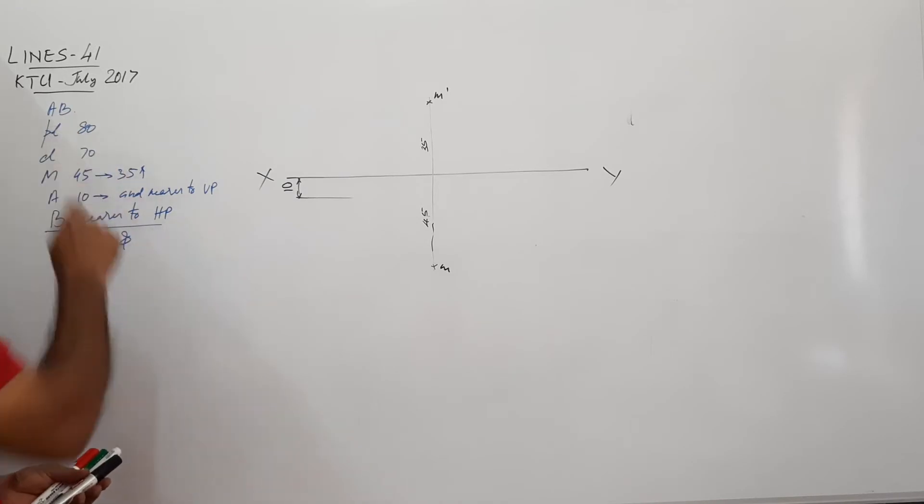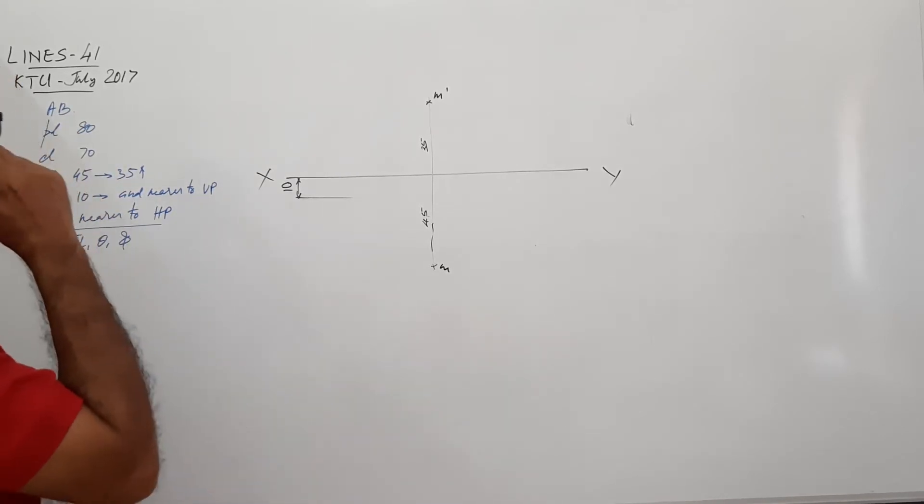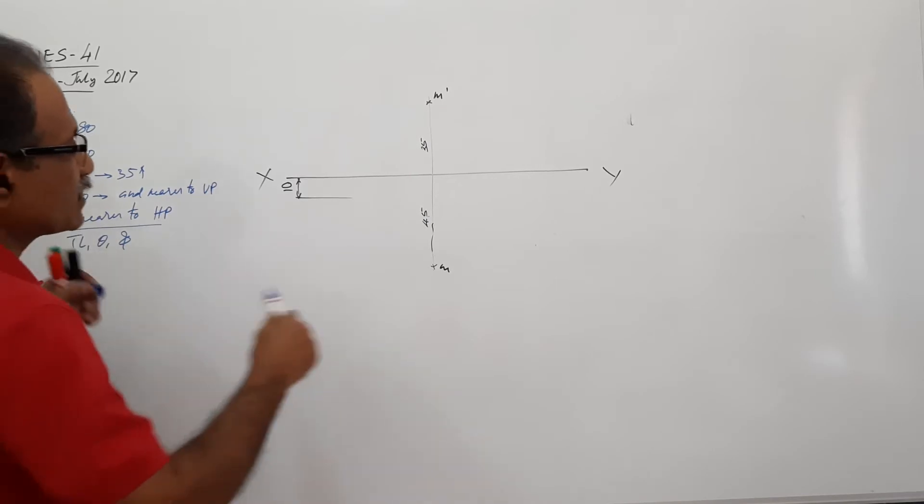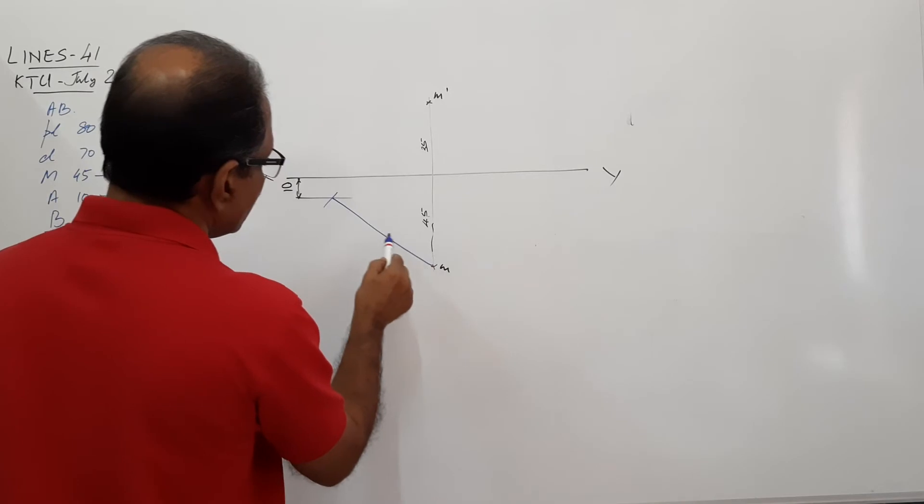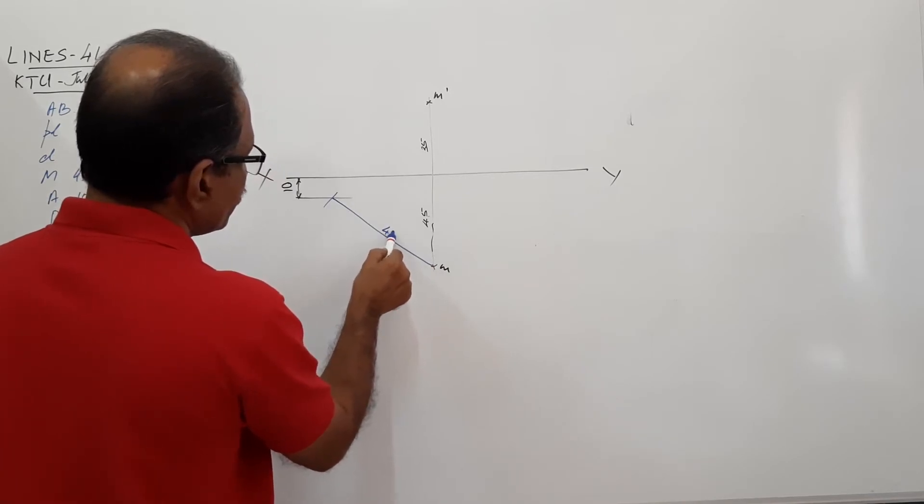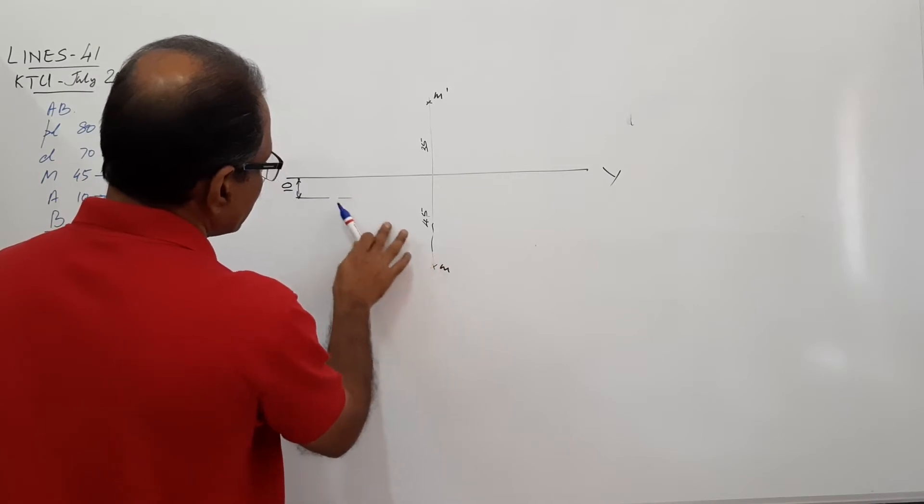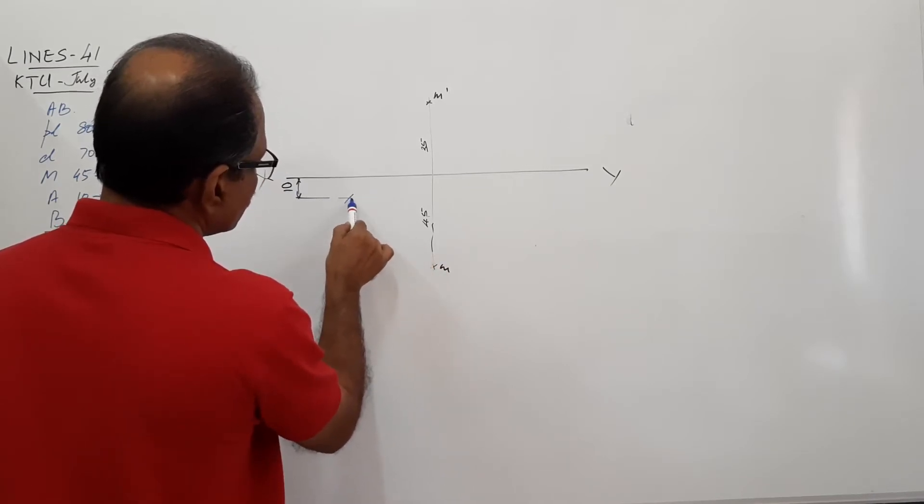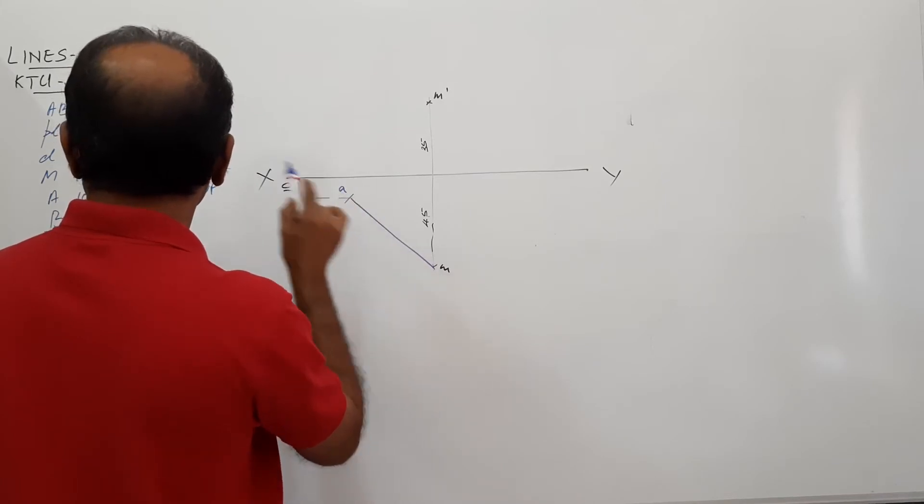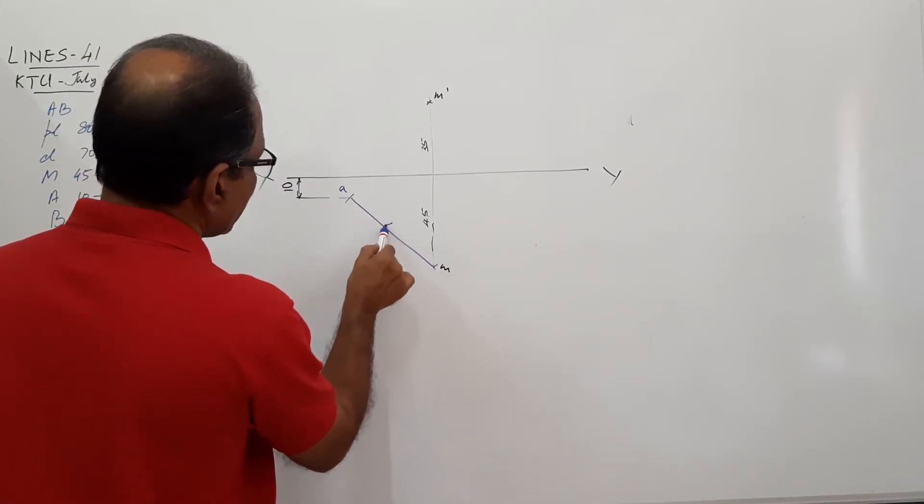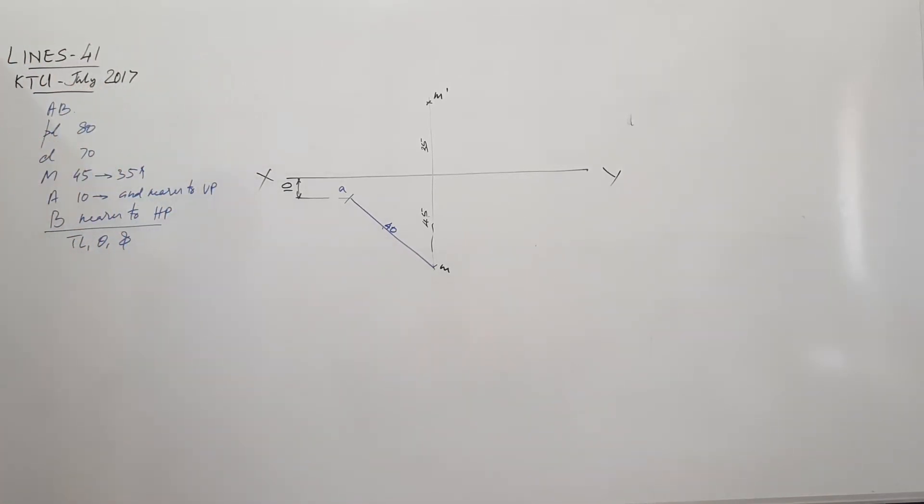The plan length is 80. Take half the plan length. And with M center, cut an arc. This is 40. Okay, it doesn't look proportionate. This is A. This is 40. What is this? Half of the plan.